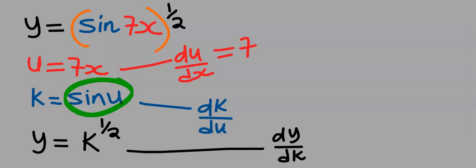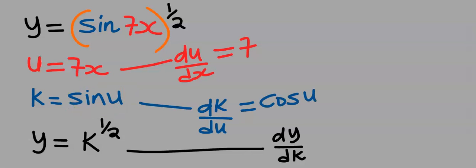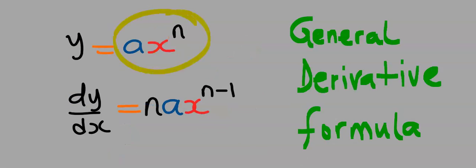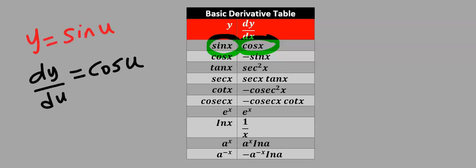Next, differentiate sin(u) and your answer is cos(u). Next, differentiate k to the power of 1/2 and your answer is 1/2 · k to the power of minus 1/2, according to the general rule for derivatives. Always remember the basic derivative table: when you differentiate sin(x) you get cos(x), and if you differentiate sin(u) you get cos(u).